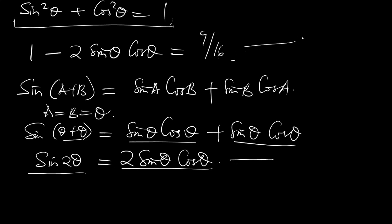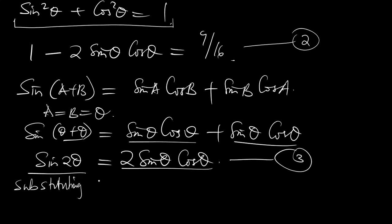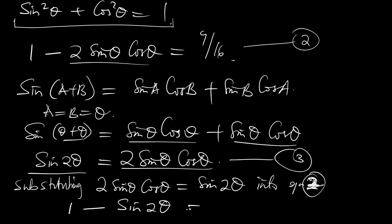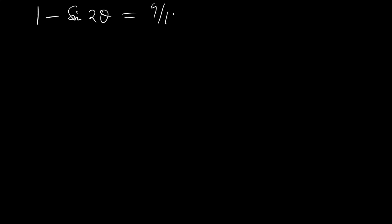We call 2 sine theta cos theta equals sine 2 theta equation 3. Substituting 2 sine theta cos theta equal to sine 2 theta into equation 2, we now have 1 minus sine 2 theta equal to 9 over 16.